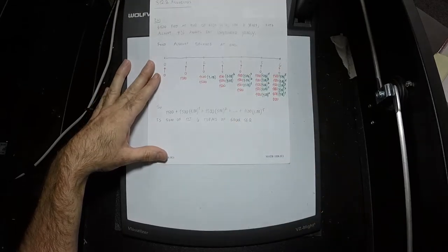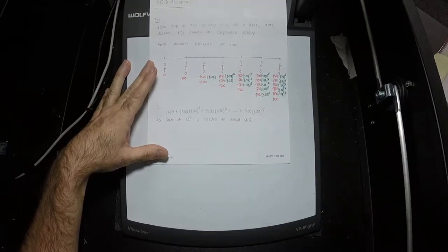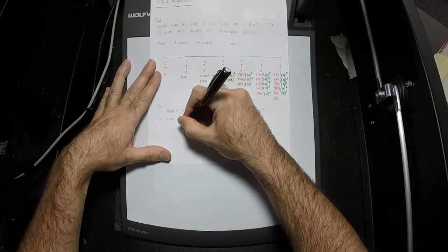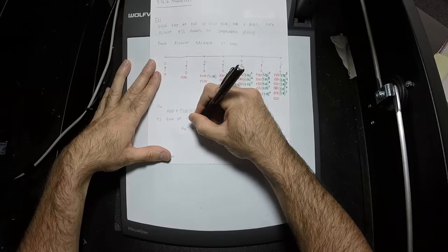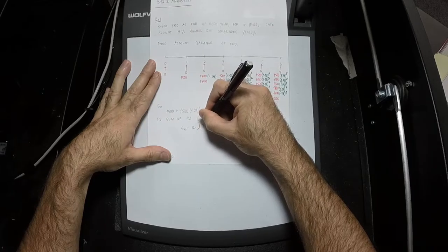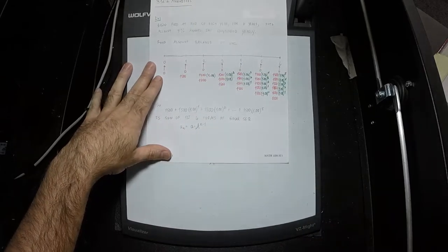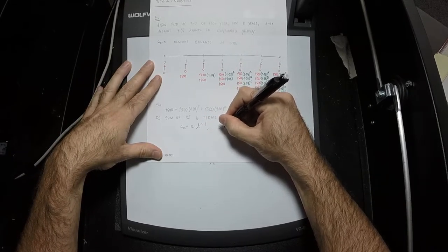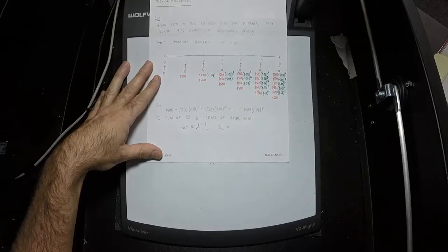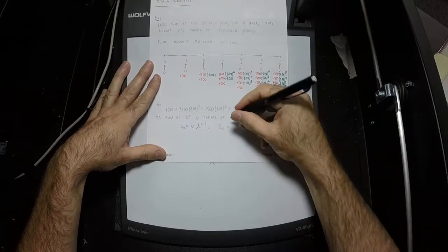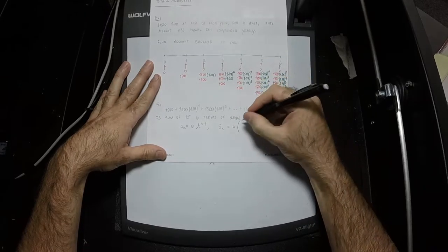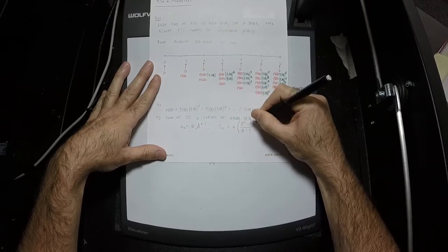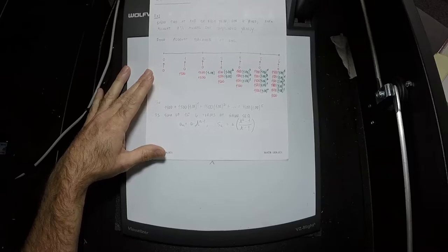And if only we had some kind of formula about that — that would be terrific! Given a geometric sequence a_n equals a multiplied by r to the n minus 1, the sum of the first k terms, denoted S_k, is: S_k = a times (r^k minus 1) divided by (r minus 1). That's the sum of the first k terms.